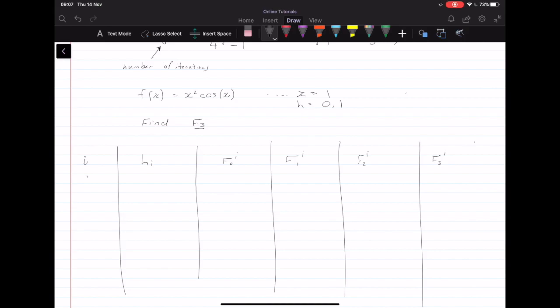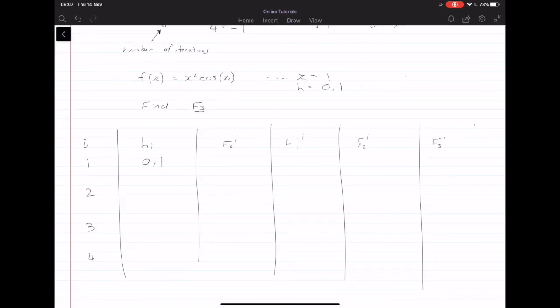Right now we have 1 and 0.1. So how do we fill in the rest of the table? So with Richardson's, we have to basically, for every i, we're going to go to four i's, we have to divide the step size by two each time. So here we're going to go 0.05, 0.025, and 0.0125.